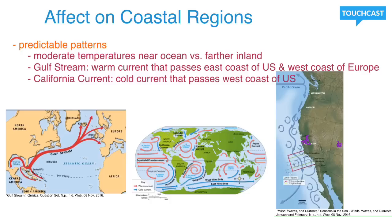There are two currents you're probably going to need to know more than any others: the Gulf Stream and the California Current. The Gulf Stream is a warm current, which tells you it originates around the equator. It passes along the east coast of the United States and the west coast of Europe, and it affects the temperatures of the areas it passes — giving those places warmer temperatures. It also brings more frequent thunderstorms. Specifically thinking about Europe, which is known to be quite cold, the Gulf Stream gives places it passes more moderate temperatures compared to further into the continent.